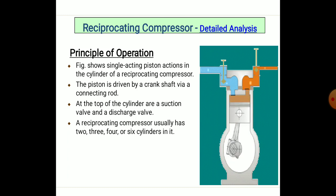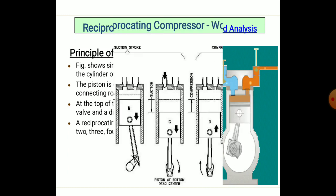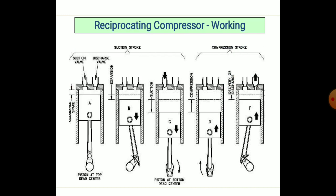Reciprocating compressors can use two, three, four, or sometimes six cylinders, depending on the requirement for compressed air. The working cycle is similar to the four-stroke engine cycle: suction, compression, power, and exhaust. During the suction stroke, atmospheric air is drawn in over 180 degrees of rotation. In the next two strokes, the air is compressed to high pressure.